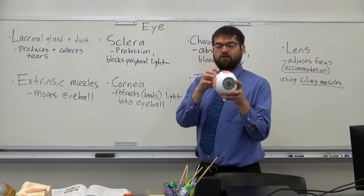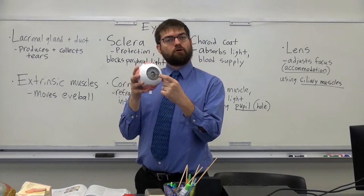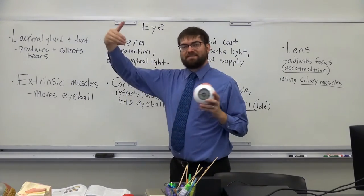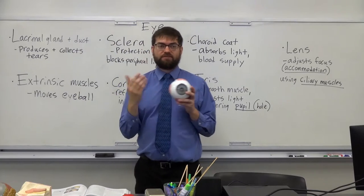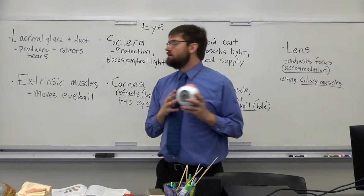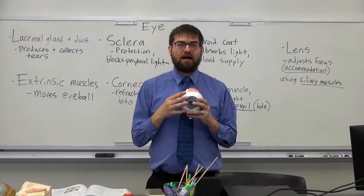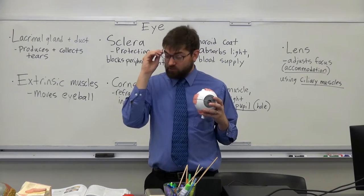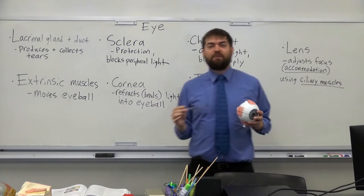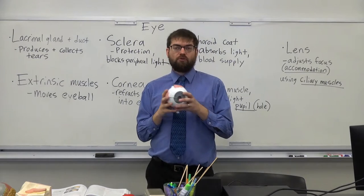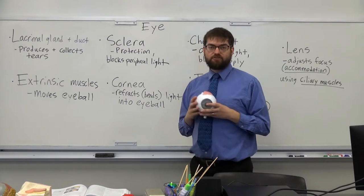At the very front of the eye we have this big curved window called the cornea. The job of the cornea is to bend and refract light so that it enters the eye straight. The shape of the cornea determines how well you see — if you're near-sighted or far-sighted, the cornea doesn't match the shape of your eye. You can get artificial corneas, or use a laser to reshape it, which is what LASIK surgery does.